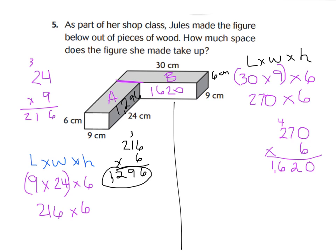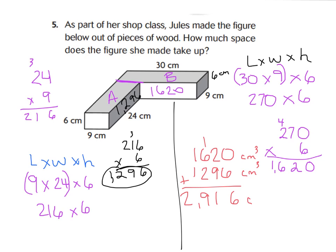Step 3 is adding A and B's volumes together. We have 1,620 cubic centimeters for rectangular prism B and 1,296 cubic centimeters for rectangular prism A. When we add those up, we get 2,916 cubic centimeters. This was a big process: first break it into two rectangular prisms, then find length times width times height for each, and finally combine them. Take your time and show your work to avoid careless errors.